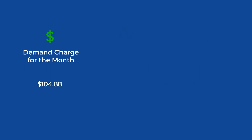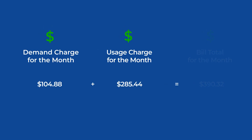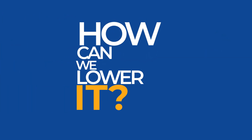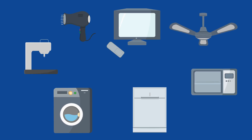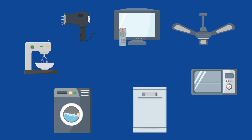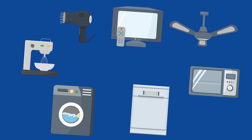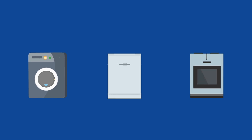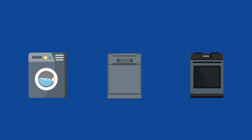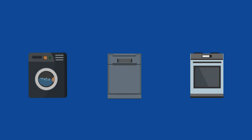The demand charge is in addition to your regular usage charges. That's a pretty high fee. So, how can we lower it? One thing you can do is try not to use very much electricity during on-peak hours. If you must use power, stagger the usage of your appliances.